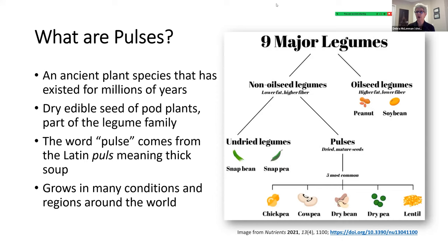Pulses are part of the legume family. The legume family is divided into two sections: the oilseed, which includes peanuts and soybeans — lots of protein, some fiber, and a blend of fats and oils — and the non-oilseed legumes, which are much lower in fat and higher in fiber. Undried legumes include fresh peas and green or yellow beans. Pulses are harvested dry — they're the dry mature seed of a pod plant. Chickpeas, cowpeas, dry beans, dried peas and lentils are all part of the pulse family.